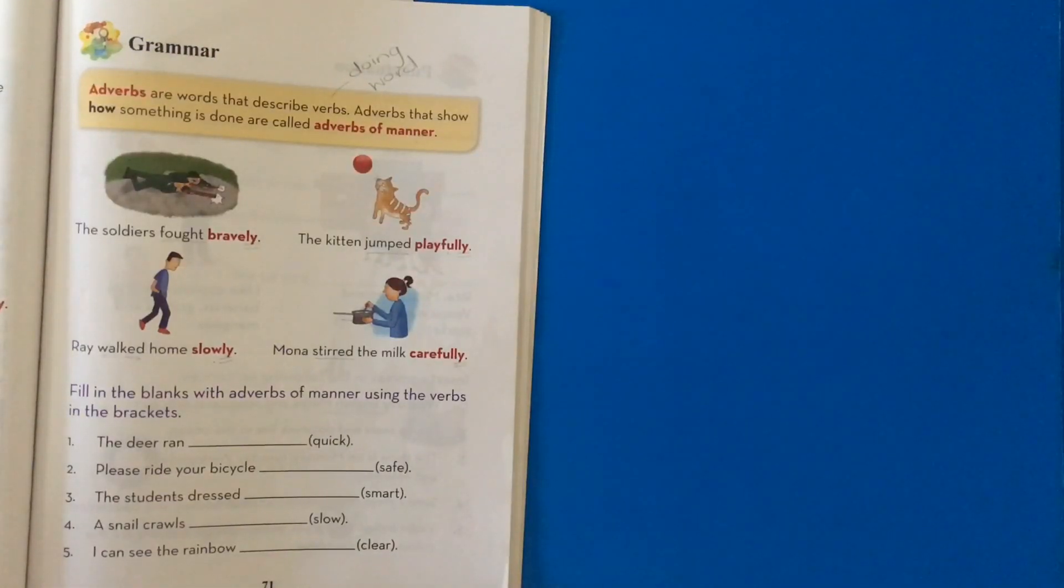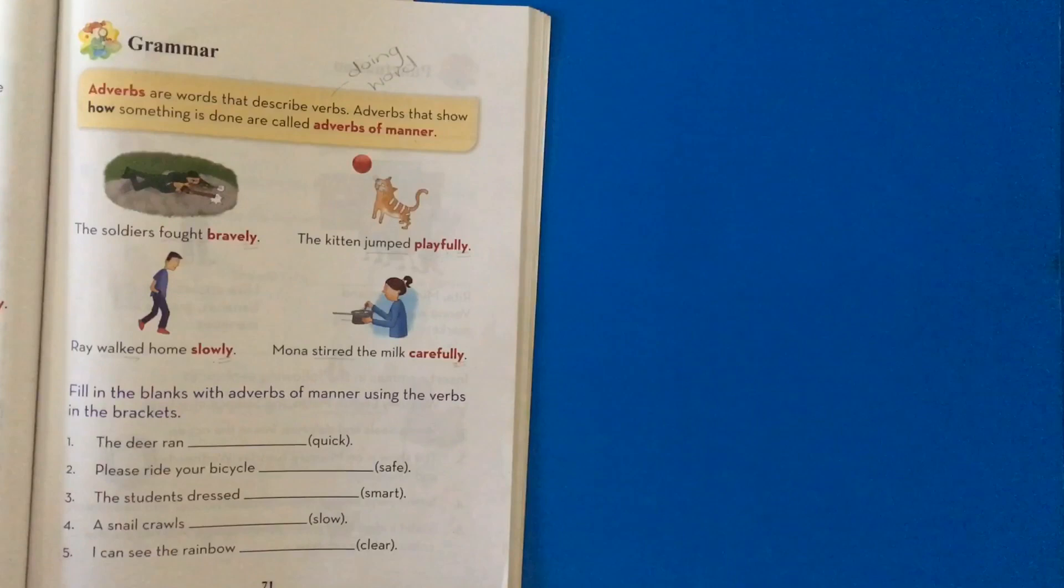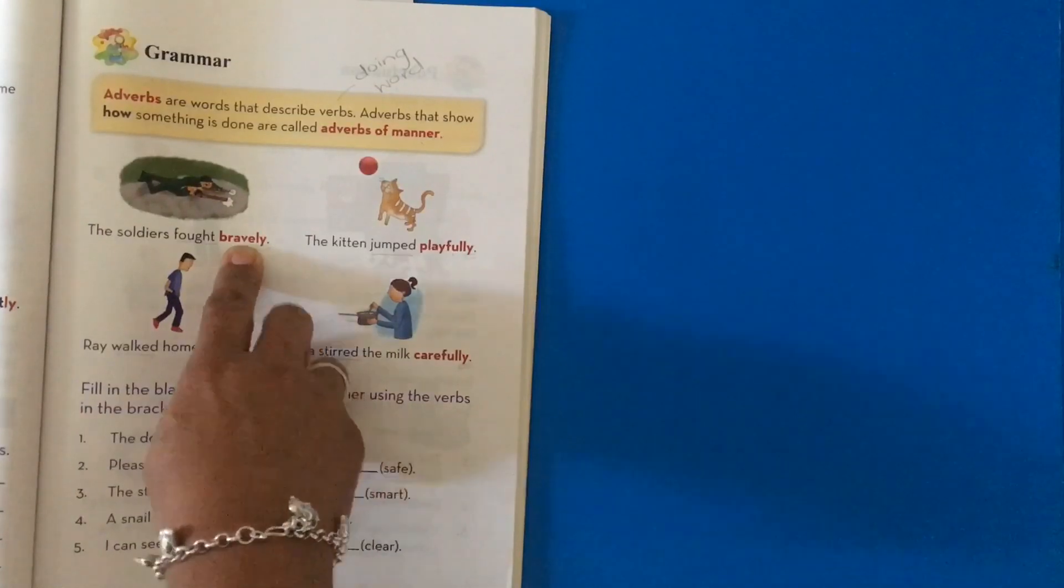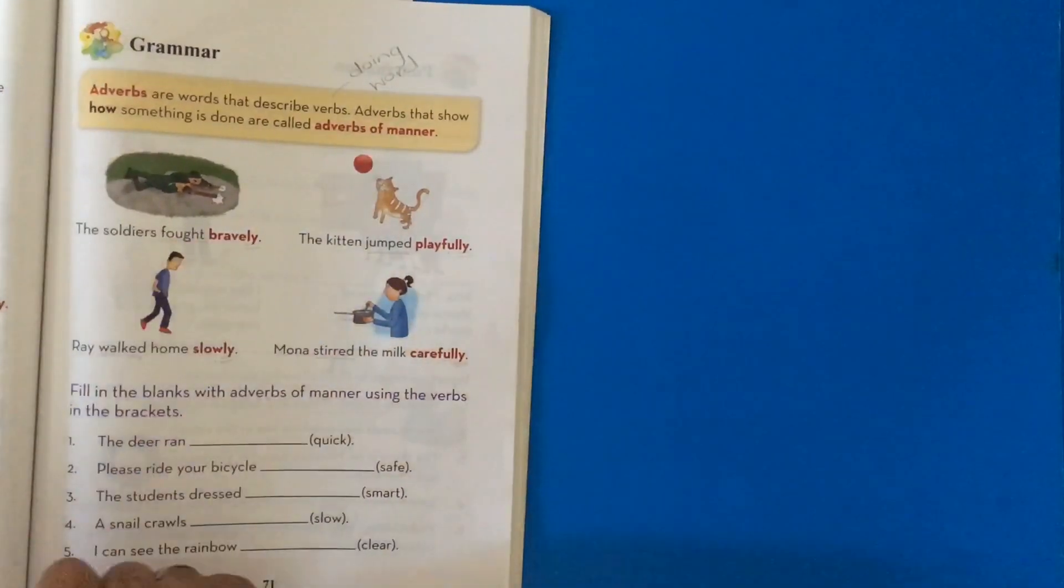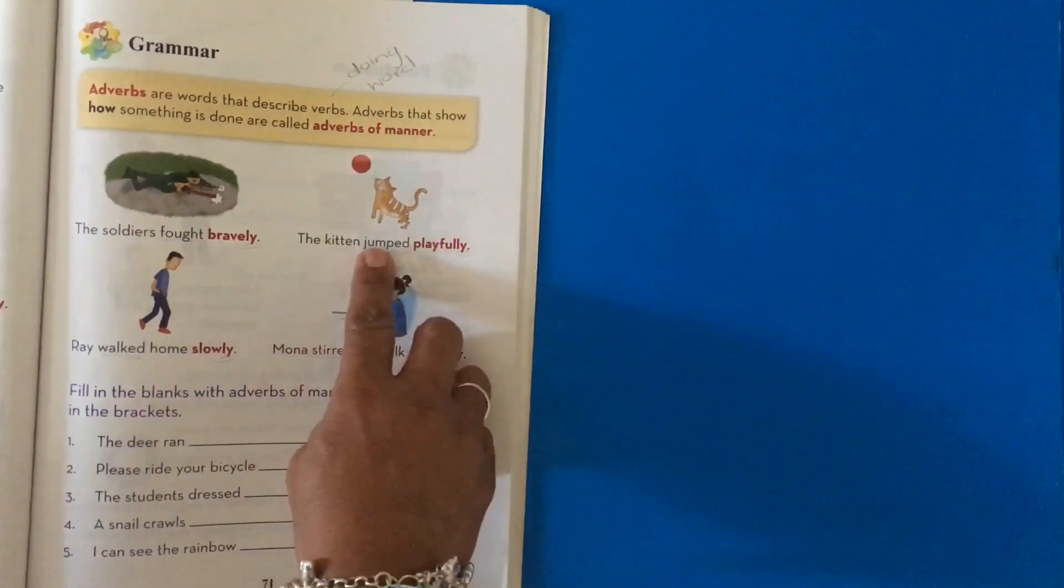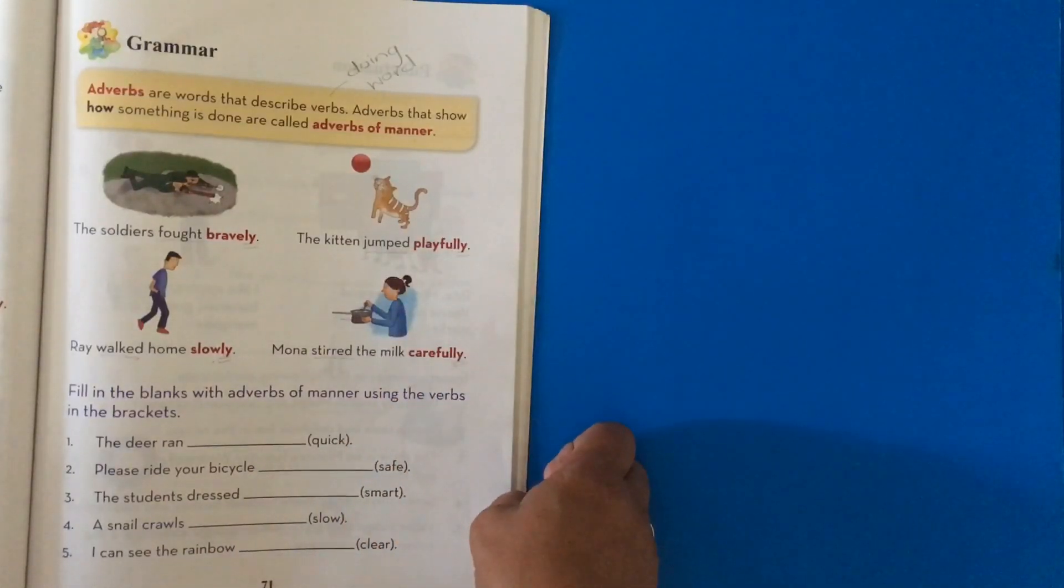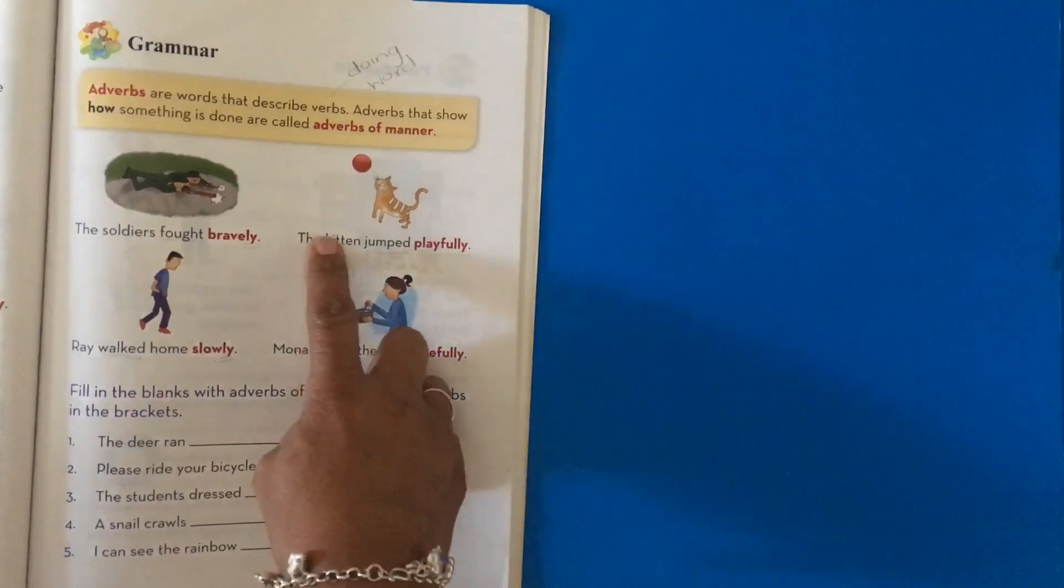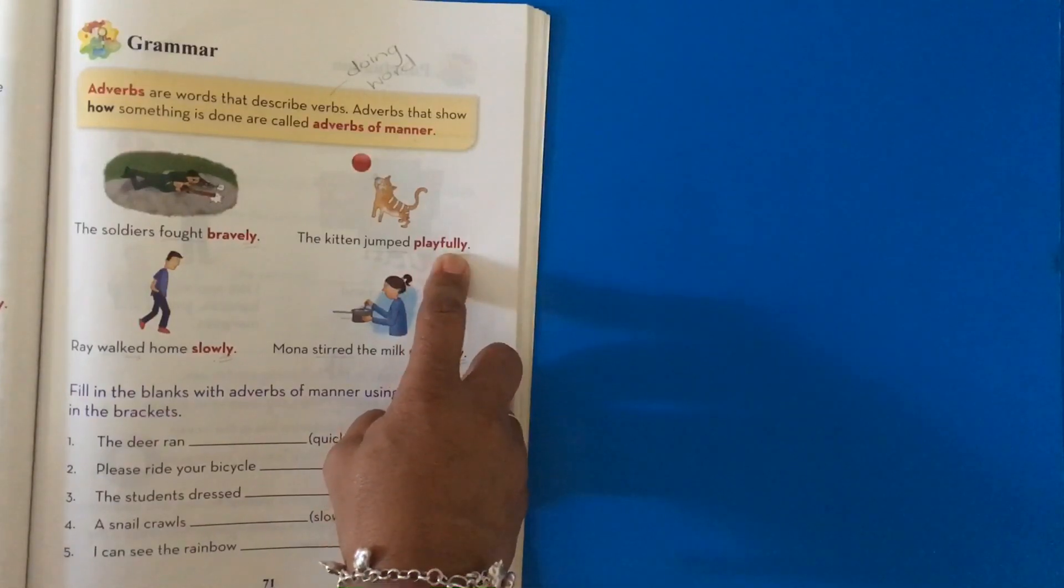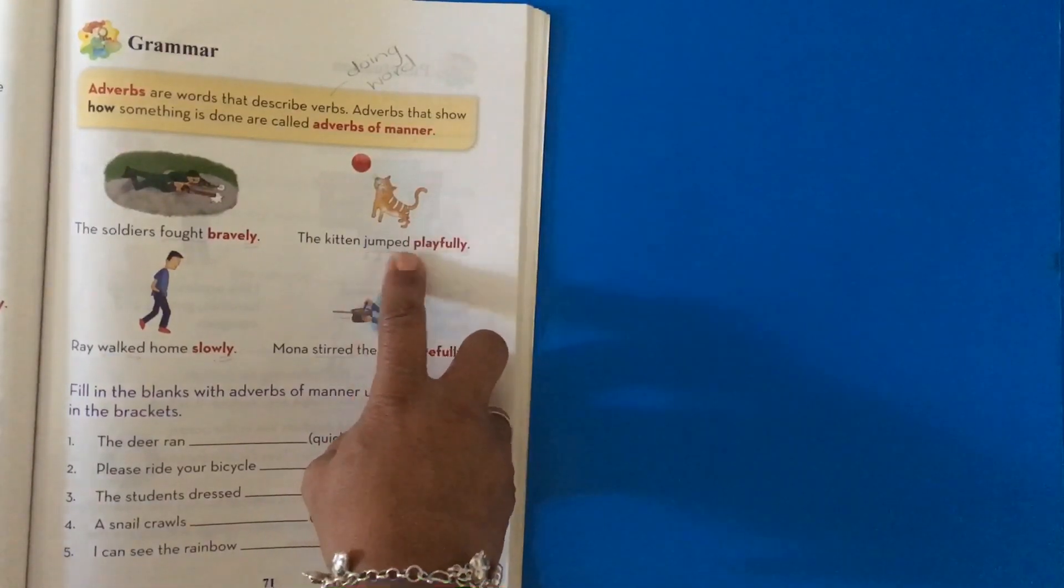Now, page 71 again. The soldiers fought bravely. How did they fight? They fought bravely. So, bravely is our adverb. What is our verb? Fought. Got it? So, you underline fought. The next one. The kitten jumped playfully. How did the kitten jump? The kitten jumped playfully. Playfully is written in red because it is our adverb and you need to underline jumped.